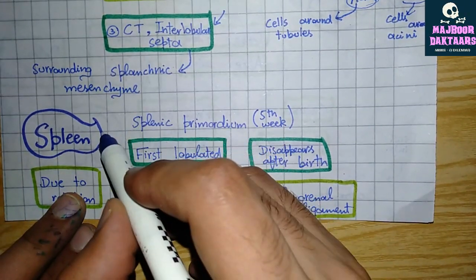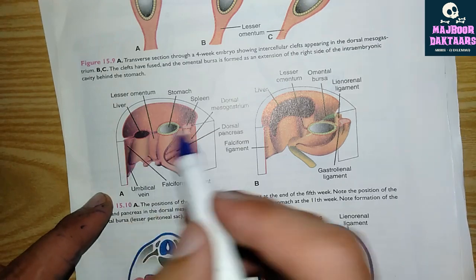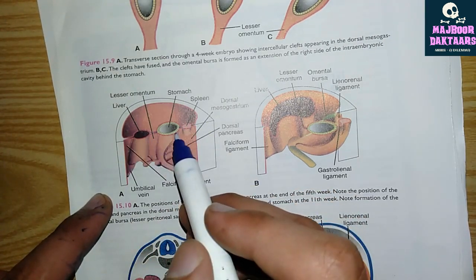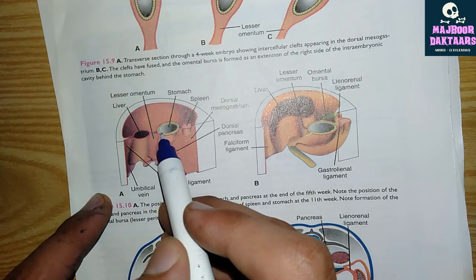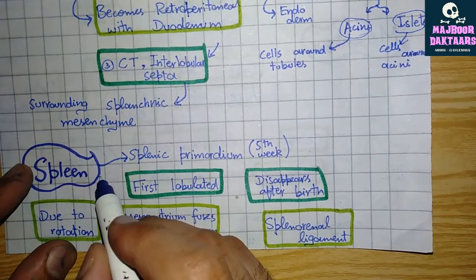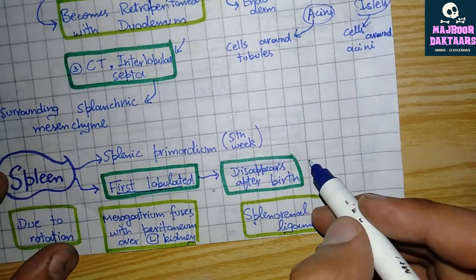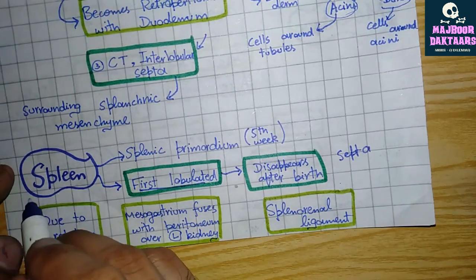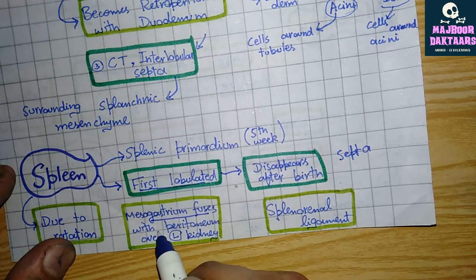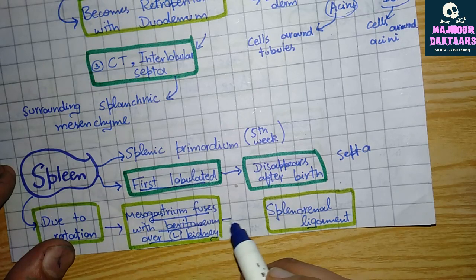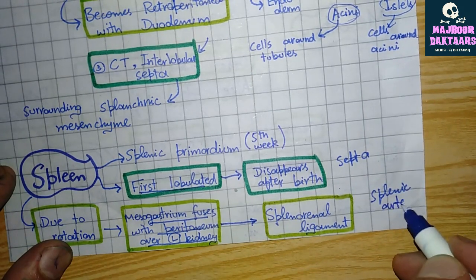The spleen is formed from the splenic primordium during the fifth week. It is formed in the dorsal mesogastrium behind the stomach, while the liver is formed in the ventral mesogastrium in front of the stomach. In intrauterine life, the spleen is lobulated, but after birth the lobules disappear and septa remain. Due to rotation, the dorsal mesogastrium attached to the spleen fuses with the peritoneum over the left kidney, giving rise to the splenorenal ligament through which the splenic artery passes — the largest branch of the celiac trunk.